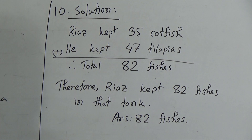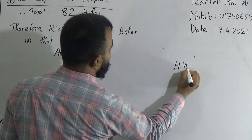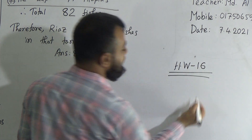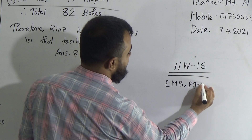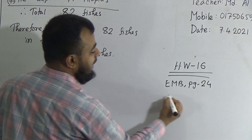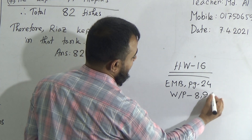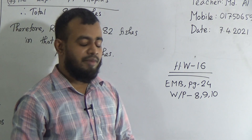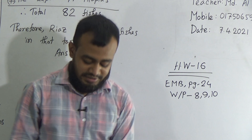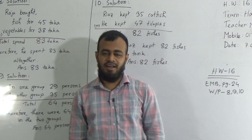I hope, dear students, you have understood how to solve these 3 word problems. You have homework — your HW number is 16. You must do these 3 problems in your homework. That means your homework is EMB, page number 24, question number 8, question number 9, and question number 10. Mention HW number 16 in your homework copy. I hope you have understood how to solve the problems. See you again, inshallah, in the next class. Till then, Allah Hafiz.